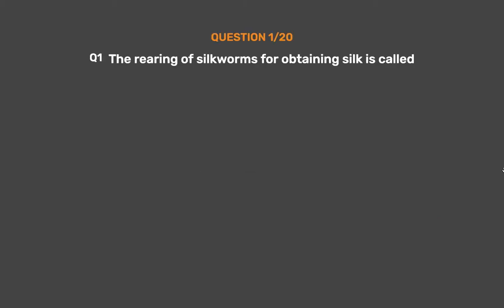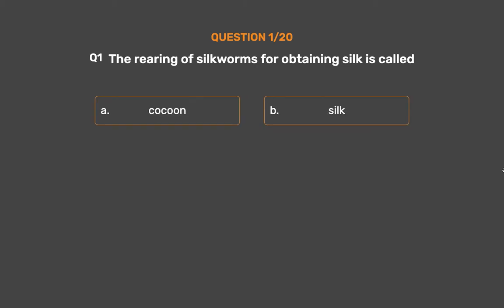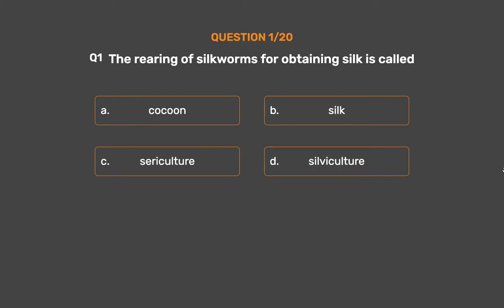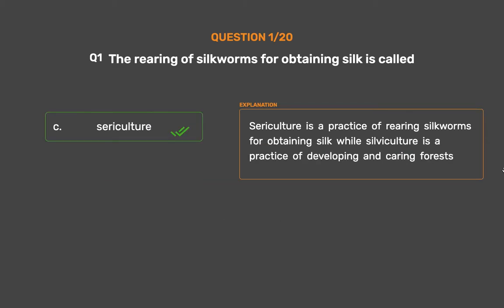Question No. 1. The rearing of silkworms for obtaining silk is called — Option A: Cocoon, Option B: Silk, Option C: Sericulture, Option D: Silviculture. The correct answer is Option C: Sericulture. Sericulture is a practice of rearing silkworms for obtaining silk, while silviculture is a practice of developing and caring for forests.